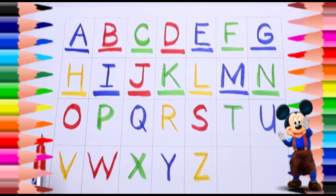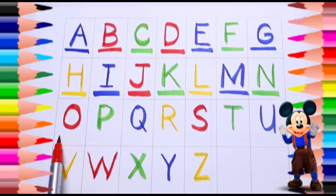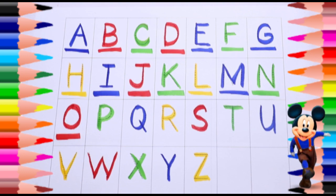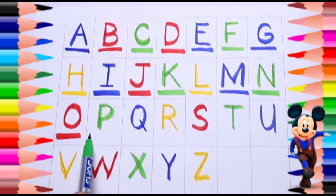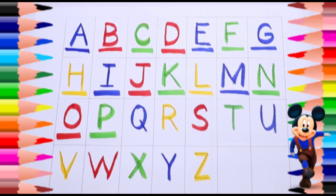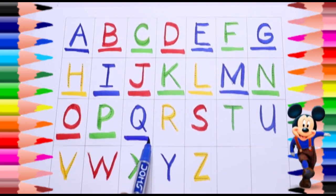Red color O, O for octopus. Green color P, P for parrot. Blue color Q, Q for queen.